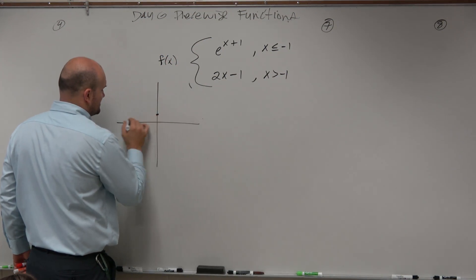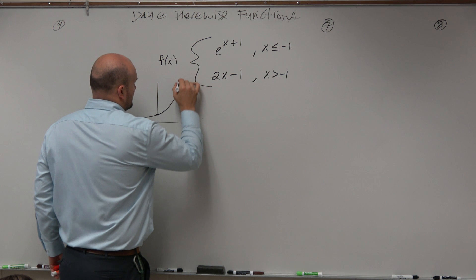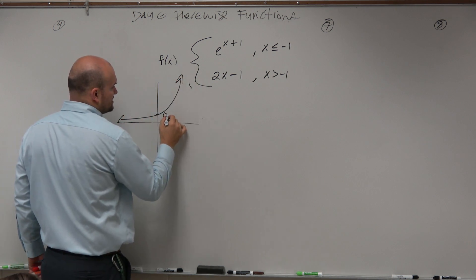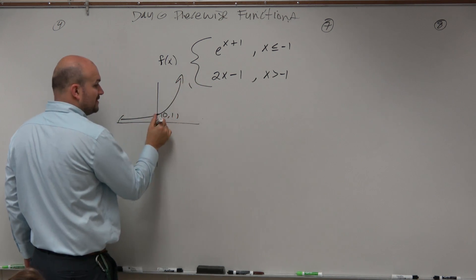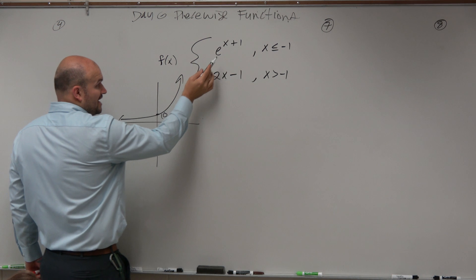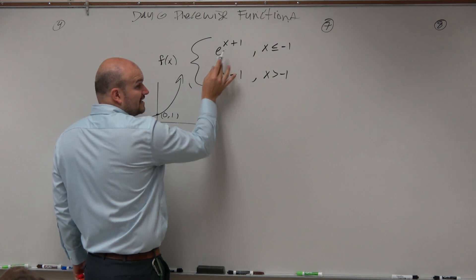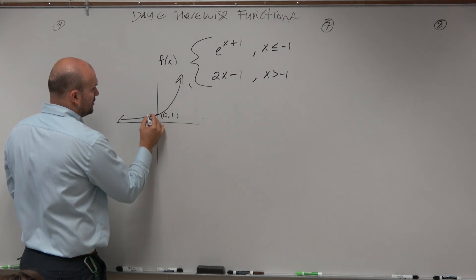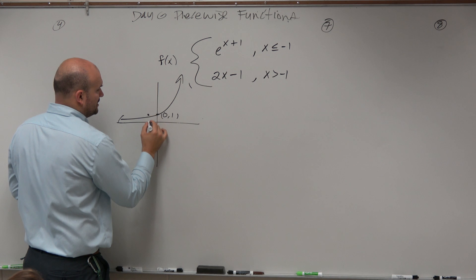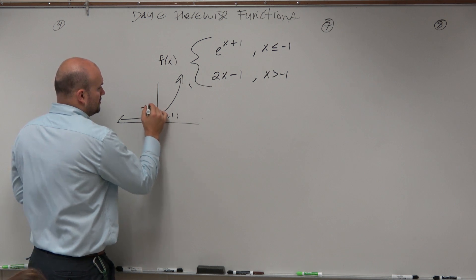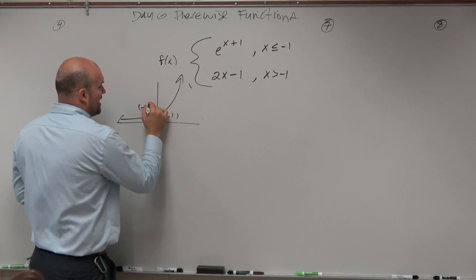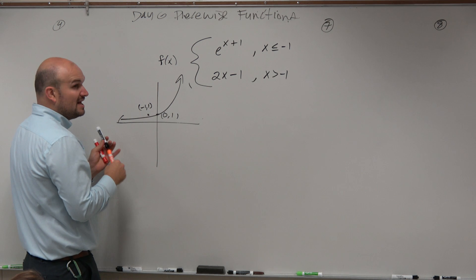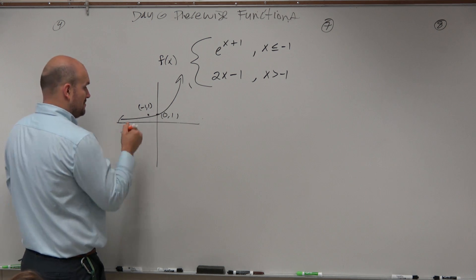Here we have e to the x. We know that crosses at 0 comma 1. However, since we have adding a 1 inside the exponent, that's shifting that whole graph over one unit to the left. So now that point that we knew, 0 comma 1, is now at negative 1 comma 1.